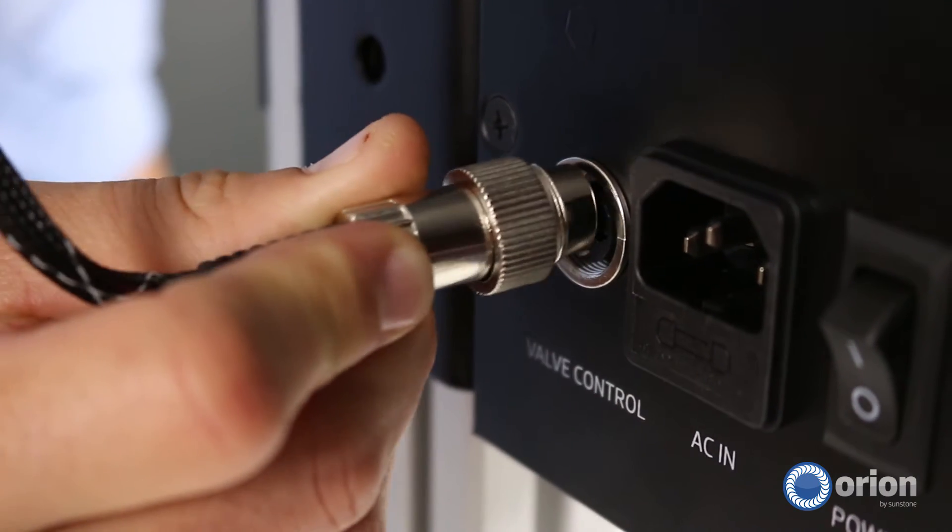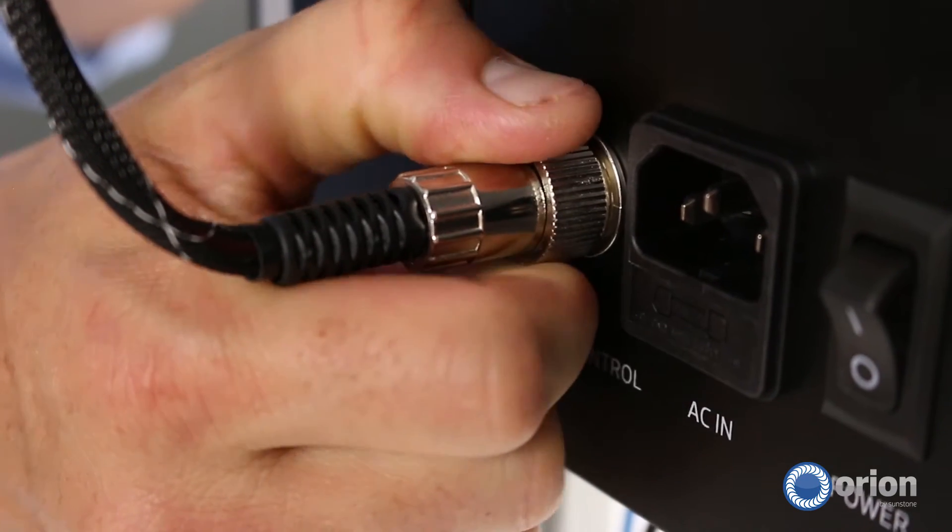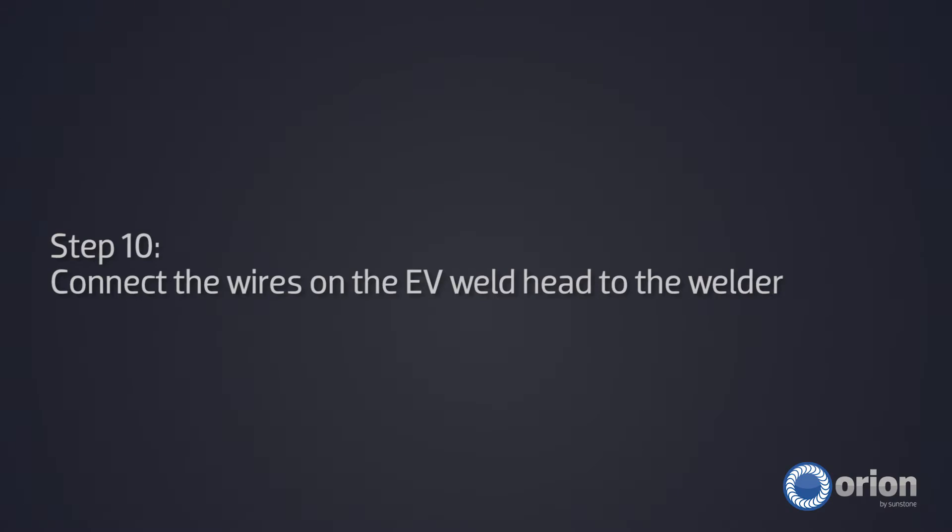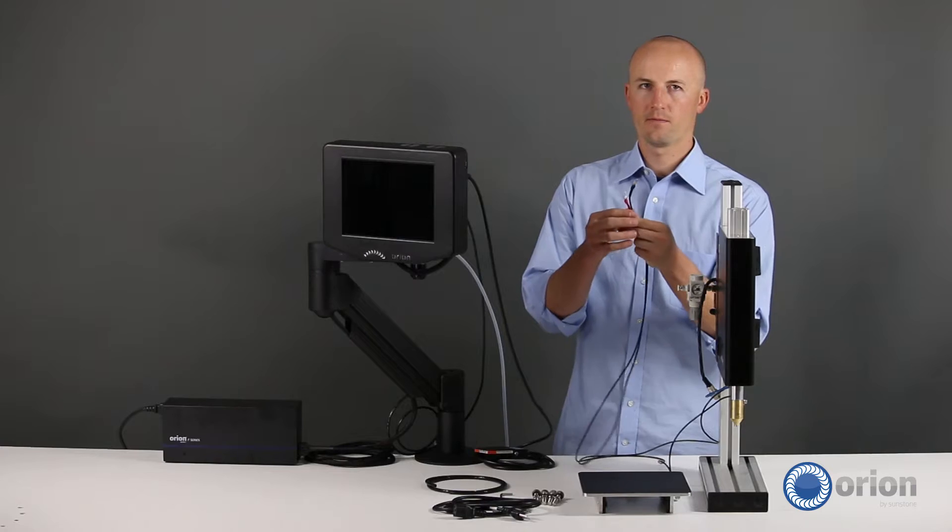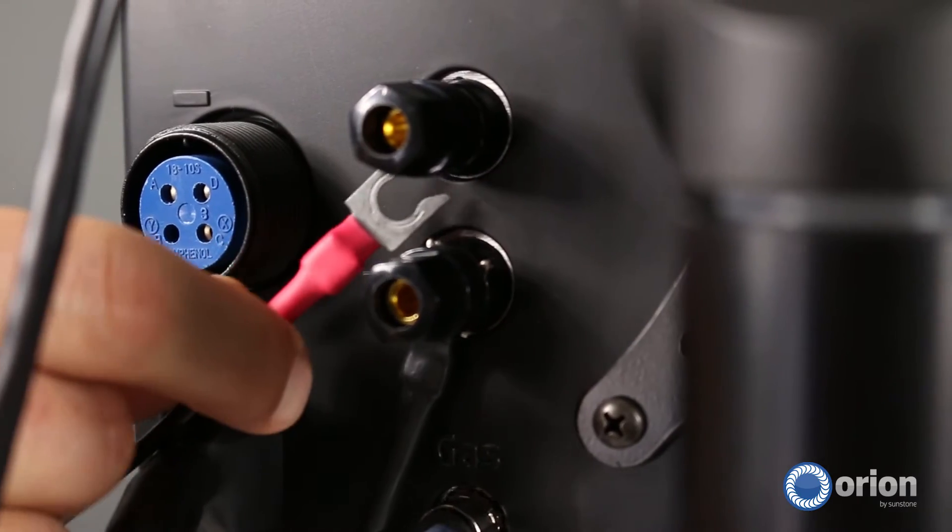Plug the 4-din connector on the back of the weld head into the valve control port on the side of the weld head. Using the wires on the weld head, connect the red wire to the positive port and the black wire to the negative port.